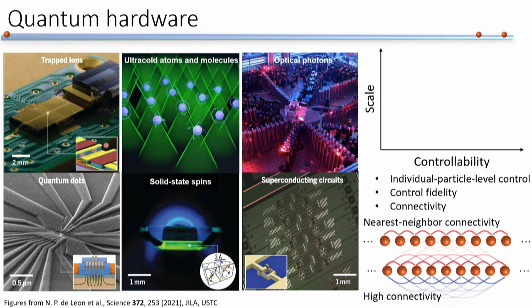Here is an example of a 1D nearest-neighbor connected qubit chain, and compared to this one, this 1D chain has much higher connectivity. For most systems, they currently sit in the lower-left corner with NISQ devices. The eventual goal is to reach the upper-right corner where we have a large-scale controllable system for fault-tolerant quantum computation and other exciting applications. Different systems have their own advantages and challenges to reach this goal, and in my PhD I've mainly focused on pushing the frontier of superconducting circuits.